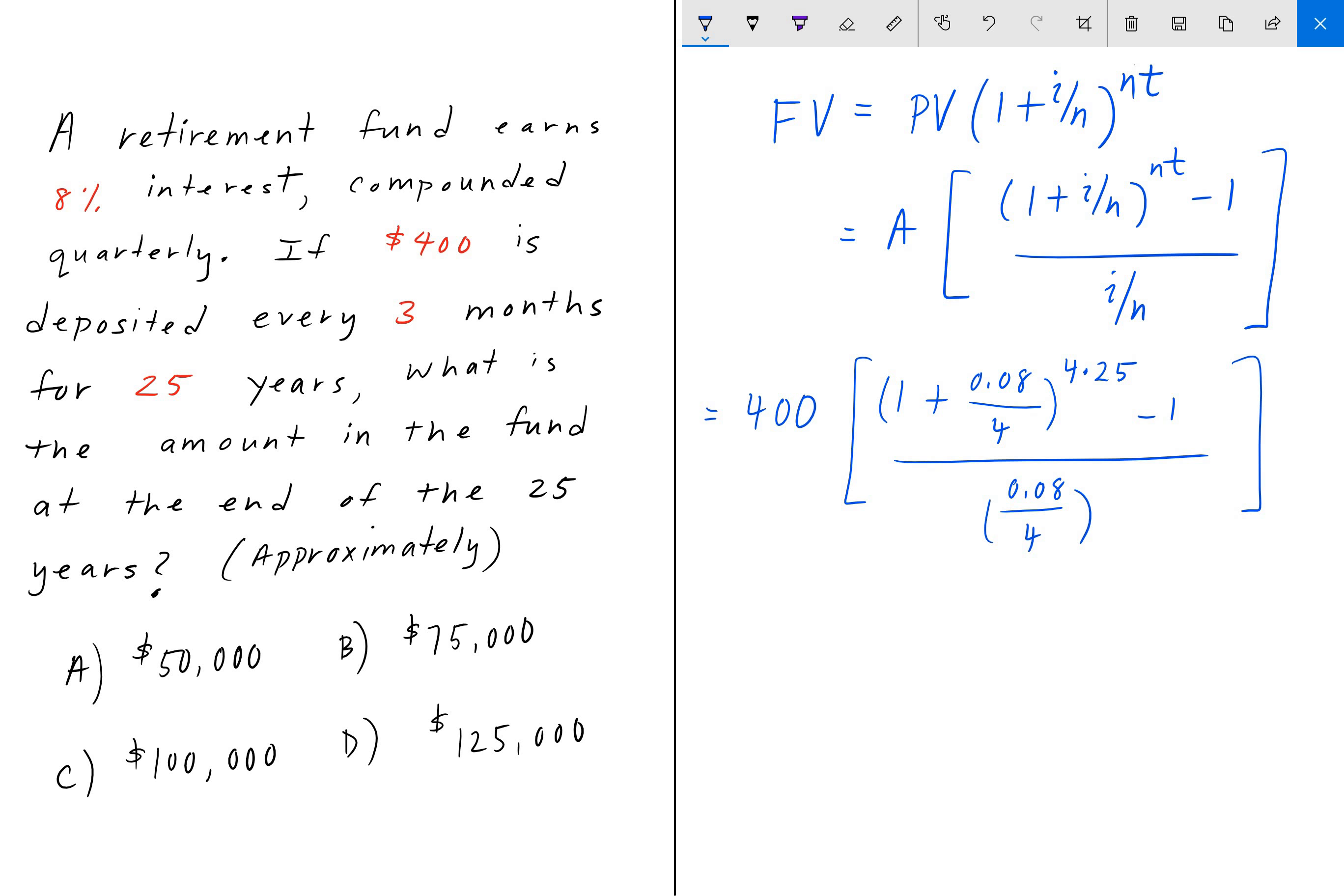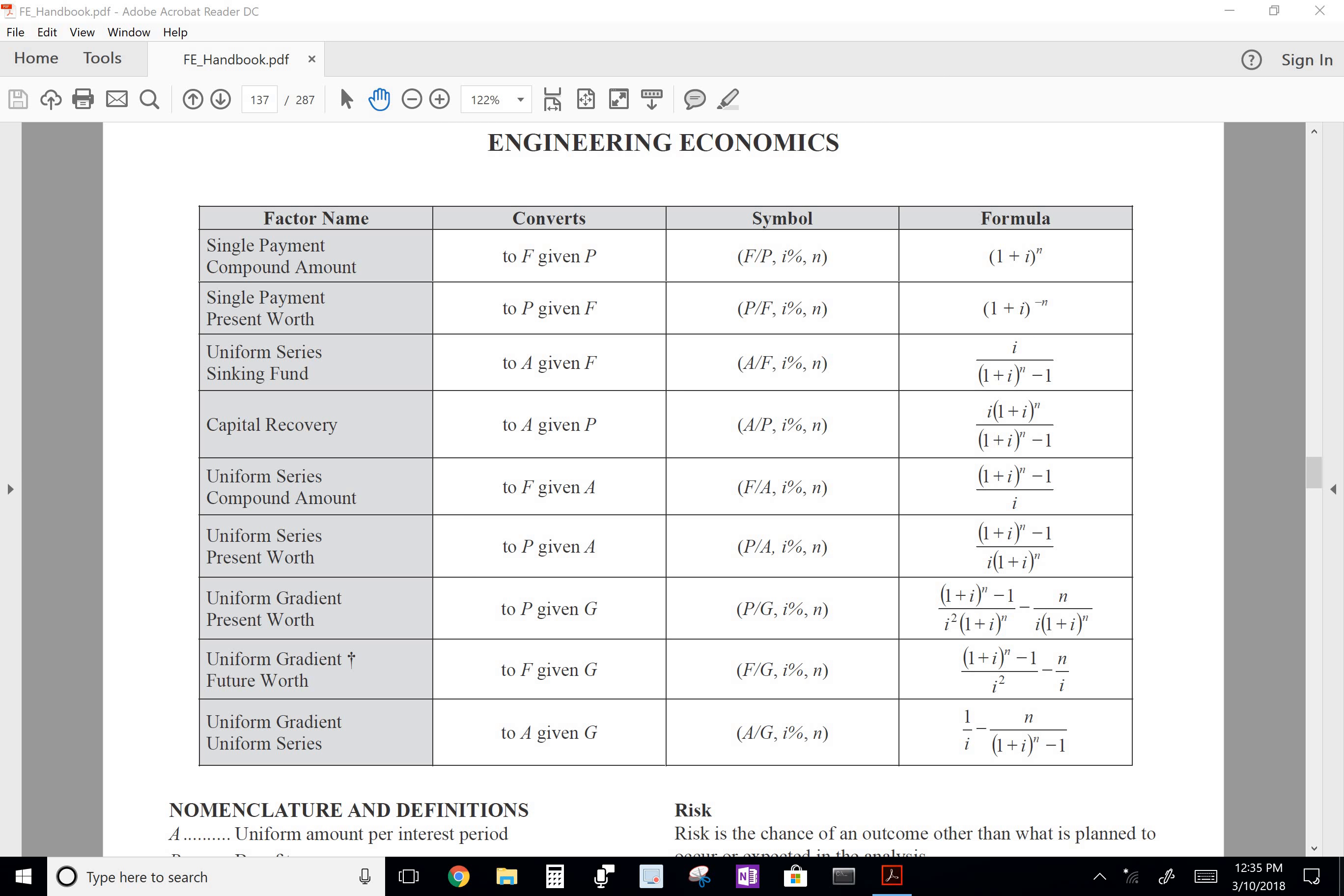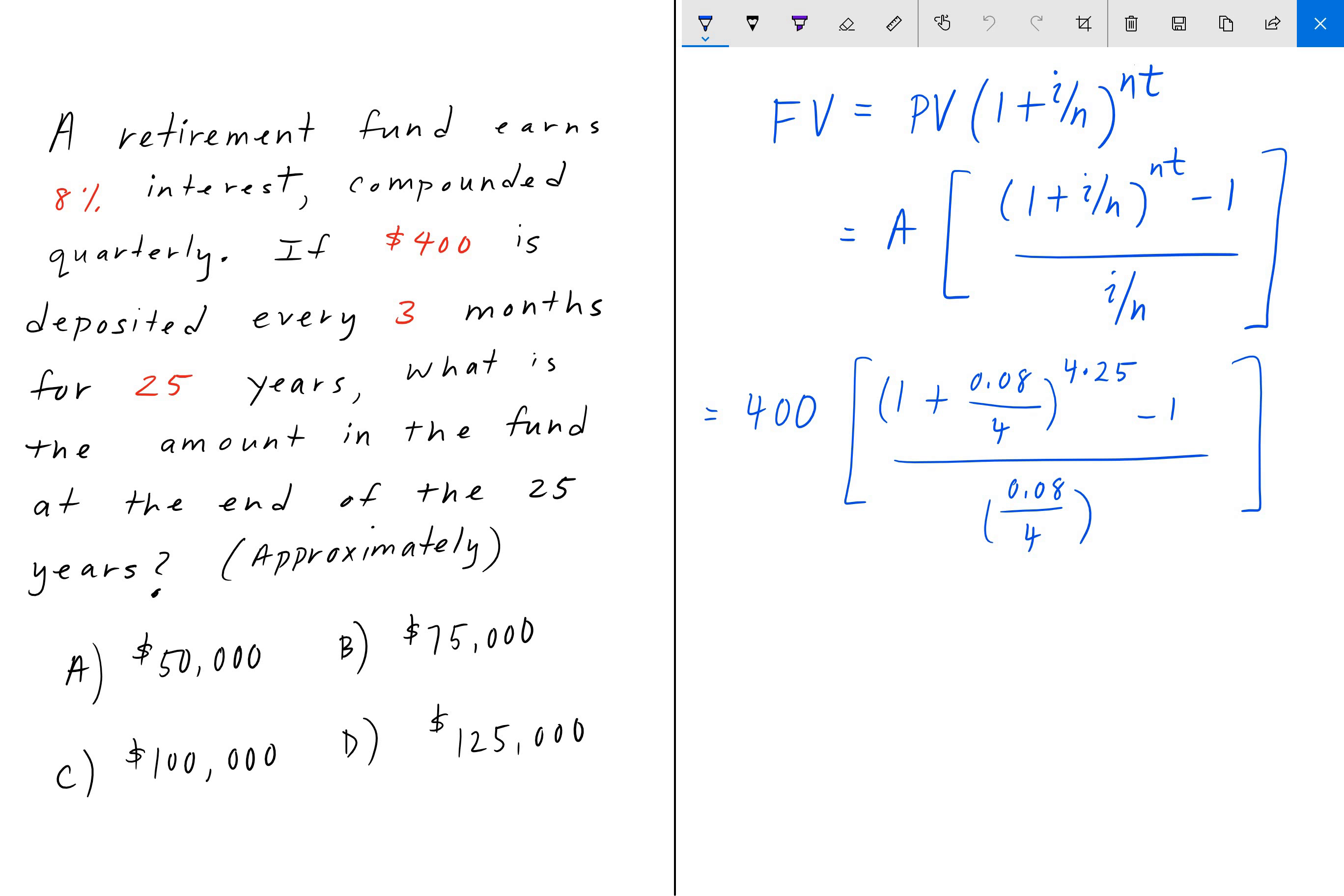Going back to the FE handbook, what I just wrote down here is analogous to this one here. They call it the uniform series compound amount. Given some payment amount A, you can find F using this equation here, which is what I wrote down. Only they don't divide i by the number of compounds, and they don't include the number of years T. I feel like something's missing in this chart, so I didn't use it. Plugging into that chart alone yielded the wrong answer, so I wasn't too comfortable with it. I went with what I knew.